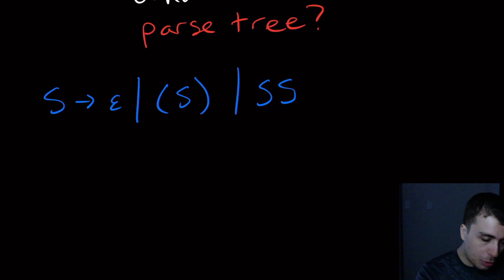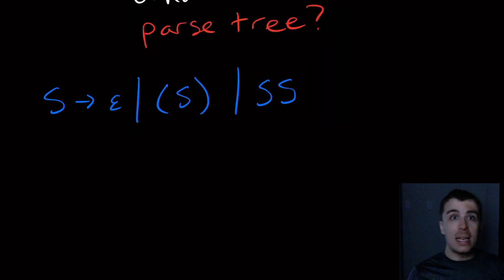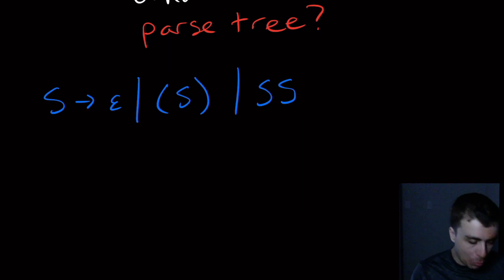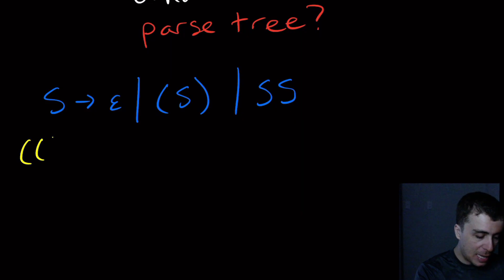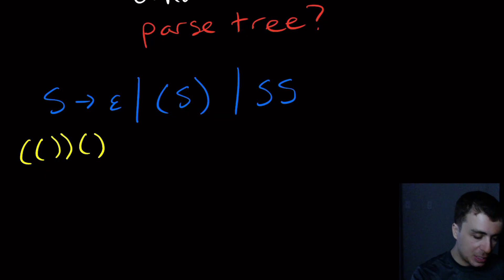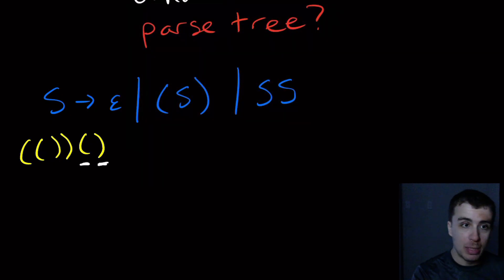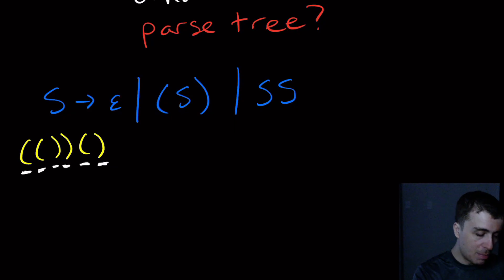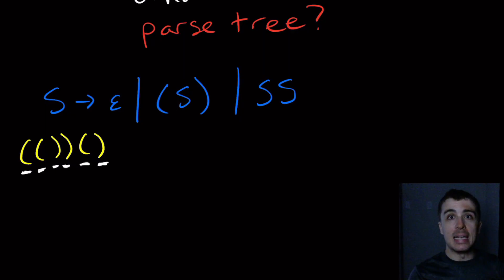Let's try to visualize what is actually happening when I try to derive a string. Let's say that we want to derive the string: left, left, right, right, left, right parenthesis. We can see that this is balanced because this left parenthesis matches with this one, this one matches with this one, and then this one matches with this one, and they're nested correctly.